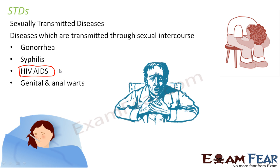AIDS is extremely deadly because no effective complete cure has been found till now. It is caused by a virus, and in this disease the immune system of the body gets affected. The immune system is like the shield of our body — it protects us against all types of infection. When the immune system itself gets attacked, there is nobody to protect the body from even small infections, and the person can sometimes even die.